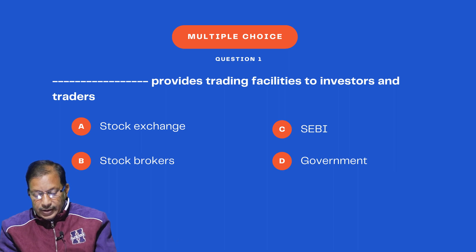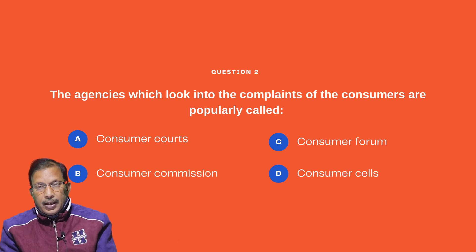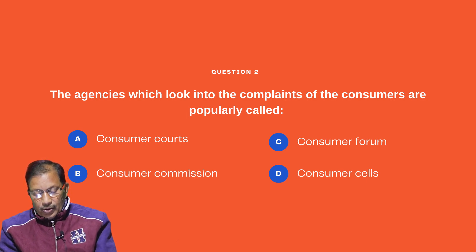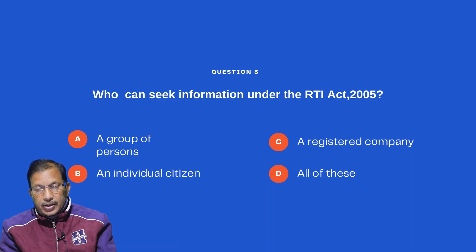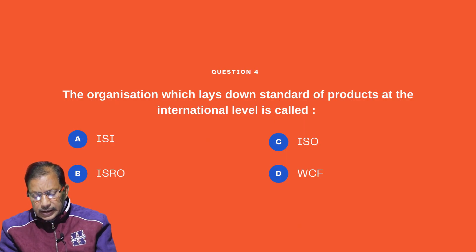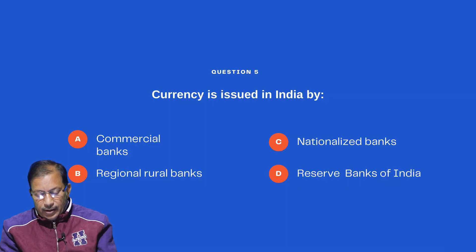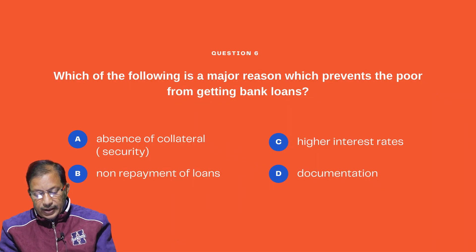Question 2: The agencies which look into the complaints of consumers are popularly called — consumer court, consumer commission, consumer forum, or consumer sales. Question 3: Who can seek information under the RTI Act — a group of persons, an individual citizen, a registered company, or all of these? Question 4: The organization which lays down standards of products at the international level is called — ISI, ISRO, ISO, or WCF. Question 5: Currency is issued in India by — commercial bank, regional rural bank, nationalized bank, or Reserve Bank of India.